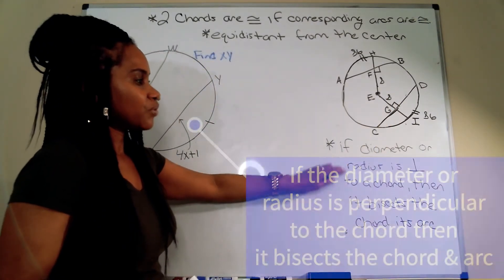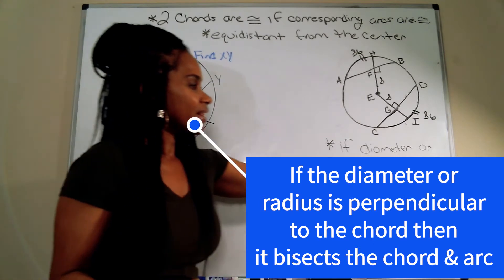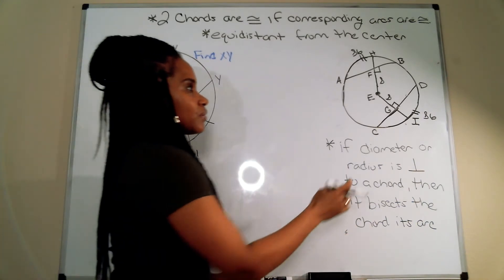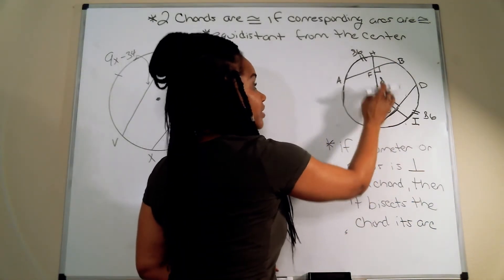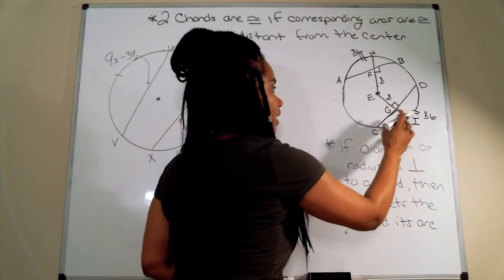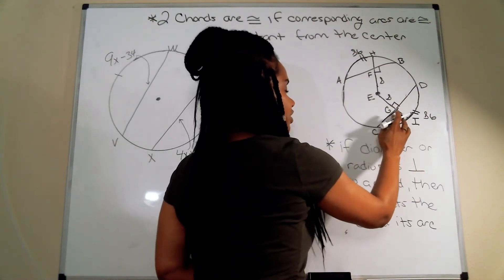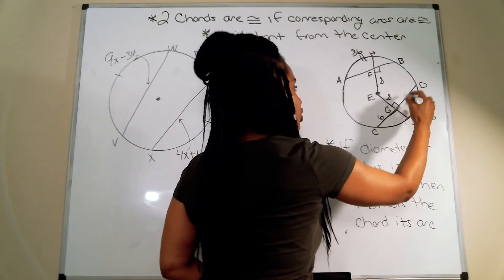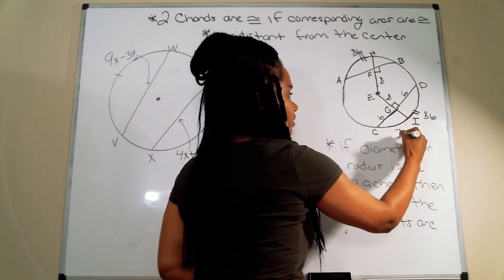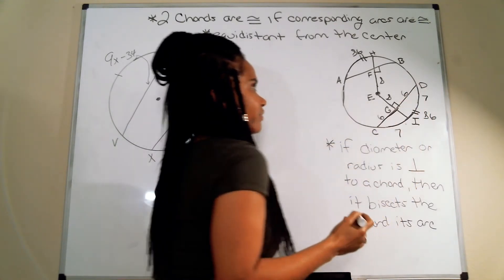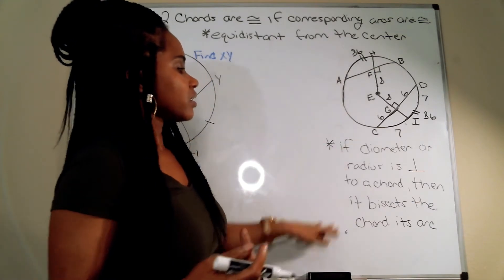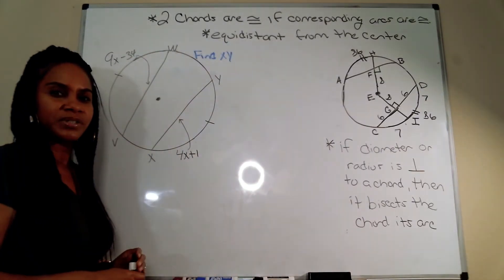One more condition: if a diameter or radius is perpendicular to a chord — the upside-down T symbol means perpendicular — then it bisects the chord and its arc. So if CG were 6, then GD would also be 6. If CI were 7, then ID would also be 7. The same applies to the arc. These are the three conditions we'll use to solve problems.